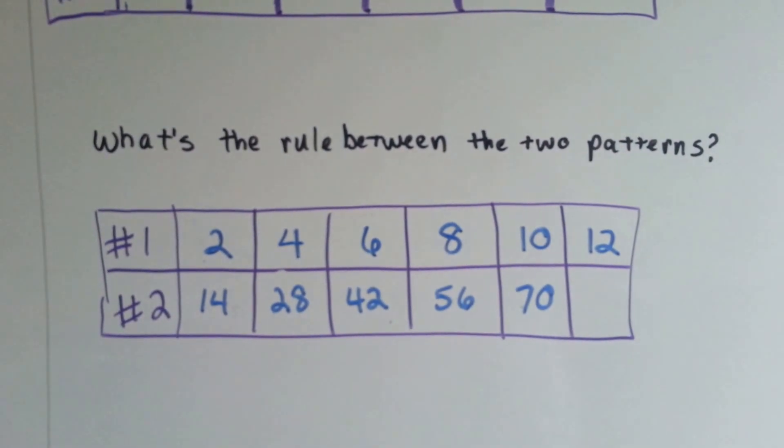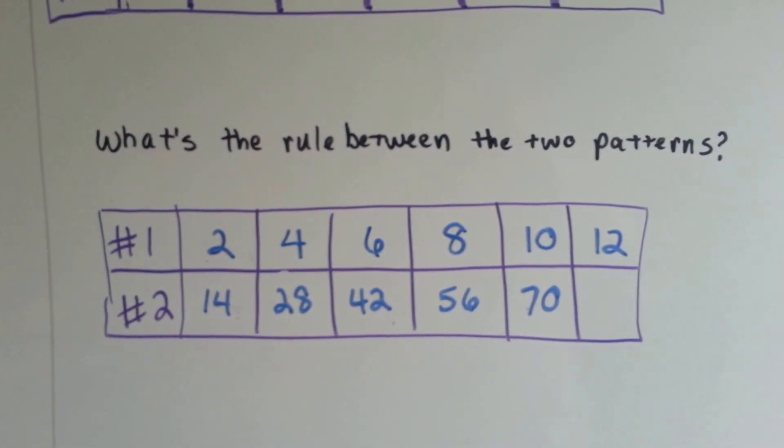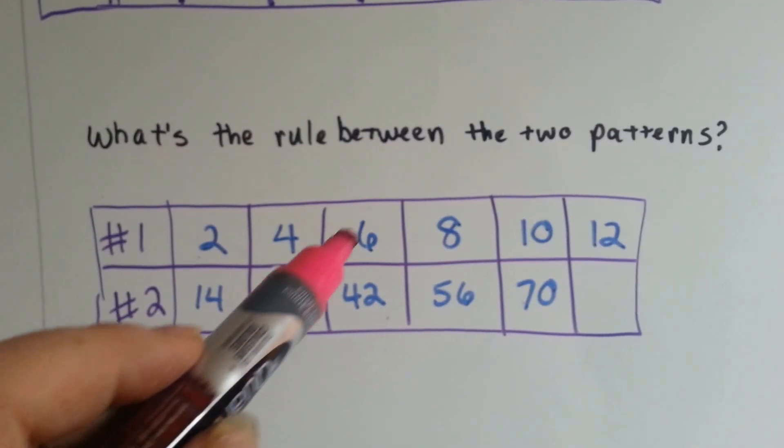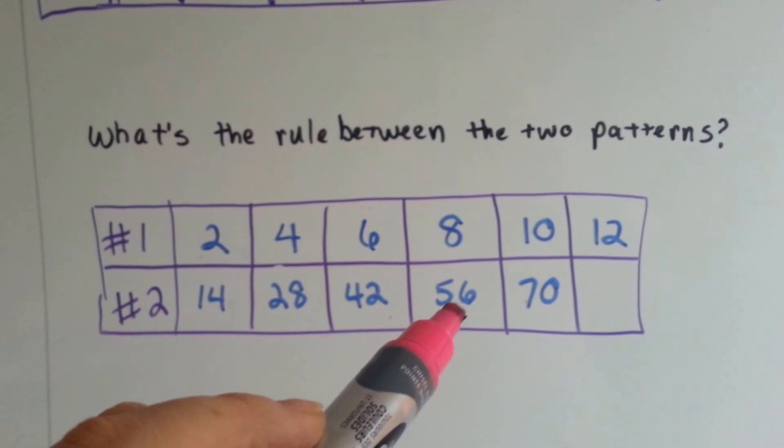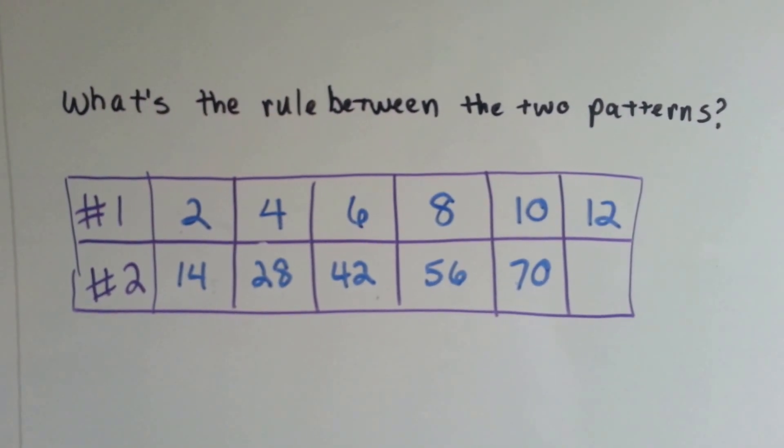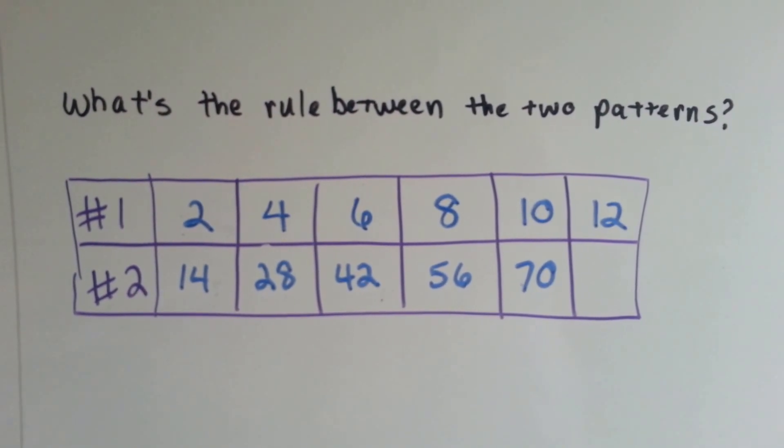How about this one? What's the rule between the two patterns? 2 and 14, 4 and 28, 6 and 42, 8 and 56, 10 and 70. Can you see the relationship between the two of them? This one's a little harder.